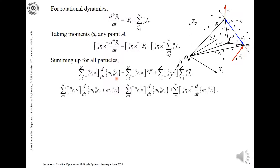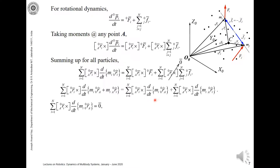The left-hand side can now be expanded. We write the position of point i with respect to frame zero as the position of A with respect to zero, plus the position of i with respect to A. Differentiating with respect to time gives us the velocities. When you expand this, you get r-cross — this is simply the expansion of the original term.